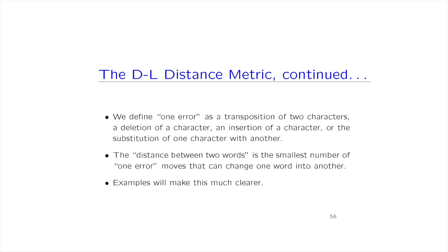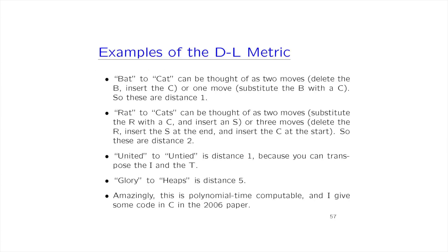Some examples: 'back' to 'cat' can be done in one move — substitute B with C — so that's distance one. 'Rat' to 'cats': you could replace R with C and insert an S, that's two moves. You could also do it in three moves — delete the R, insert the S at the end, delete the C at the start — but we always want the smallest possible number of moves, so the distance is two.